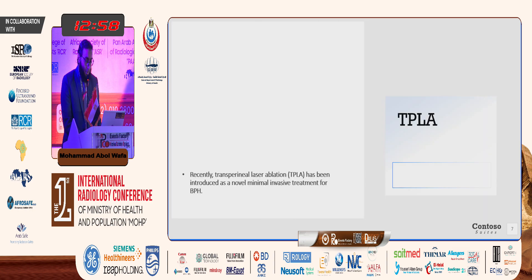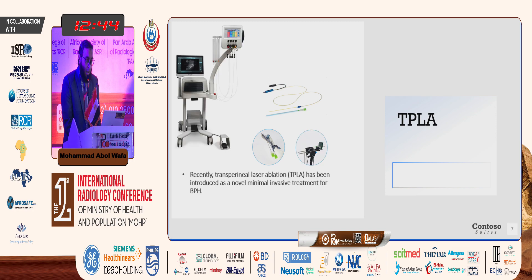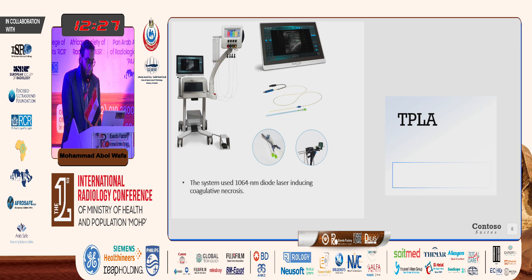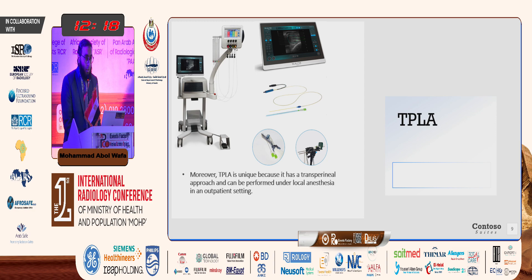Transperineal laser ablation is performed through introduction of a small needle using a guiding system and a machine that generates low energy under an interface to produce coagulative necrosis in the prostate. The procedure may be done under local anesthesia, or the patient may need light sedation.